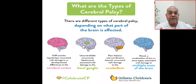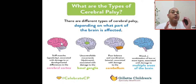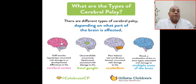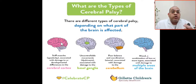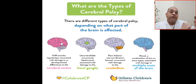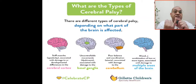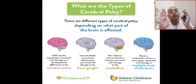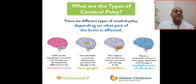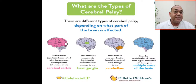The first type involves the cerebral cortex. If the cerebral cortex is affected, the baby will be stiff and spastic — this is spastic CP. The muscles will be stiff, and it is associated with damage or developmental differences in the cerebral cortex, leading to spastic CP.